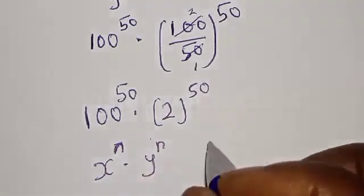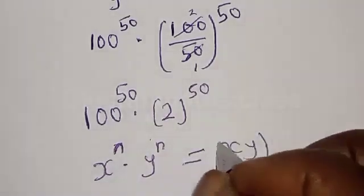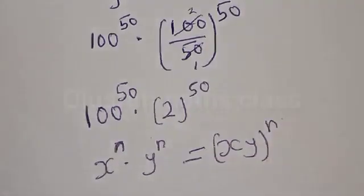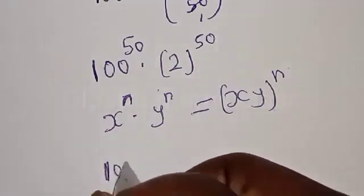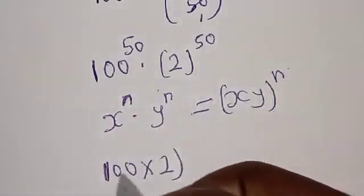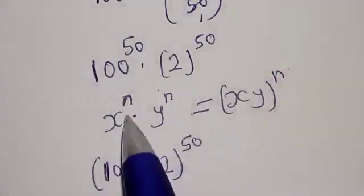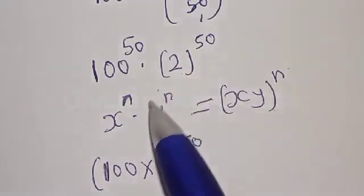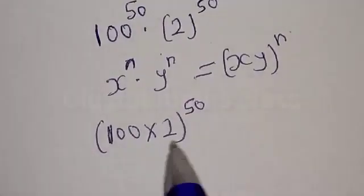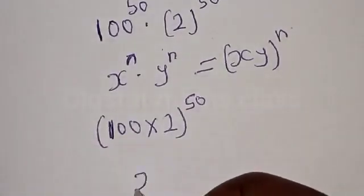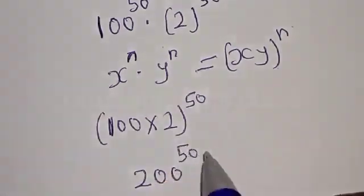Remember that if you have s times y raised to power n, then we have 100 multiplied by 2 raised to power 50, because our s is 100 and y is 2 and n is 50. So we have 100 times 2, which is 200 raised to power 50. This is the final answer.